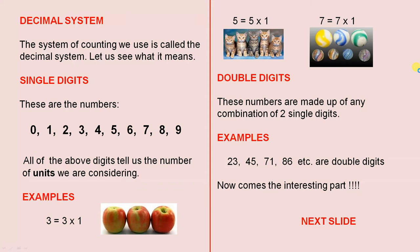Firstly, let's look at single digits. These are the numbers 0, 1, 2, 3, 4, 5, 6, 7, 8, 9.